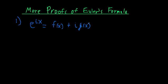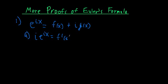We have one expression, and we're going to manipulate it in two ways and compare the results. The first way is we're going to take the derivative of both sides. The derivative of the exponential function is just going to be itself, and then through the chain rule, we're going to multiply by the exponent and essentially multiply by an I. Taking the derivative on the right-hand side, we get F prime of X plus I times G prime of X. That's one manipulation.